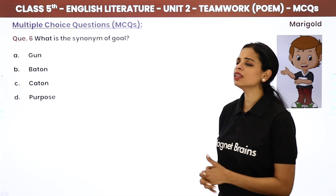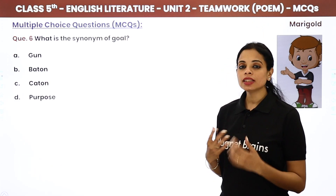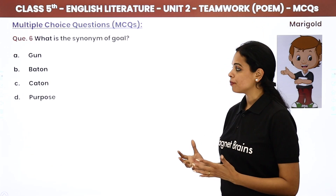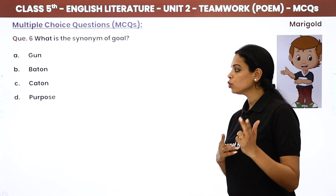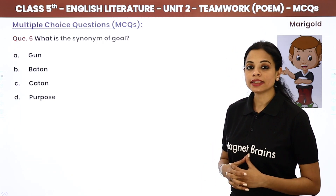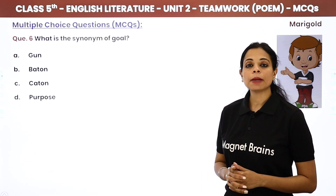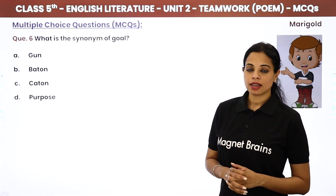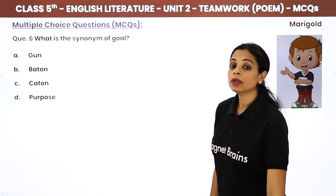What is the synonym of 'goal'? Options are gun, baton, katen, or purpose. Goal ka synonym 'purpose' hota hai. The answer is purpose.